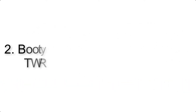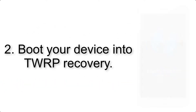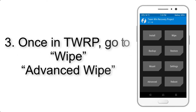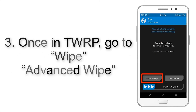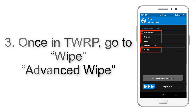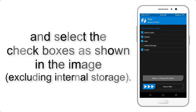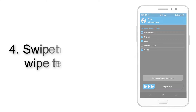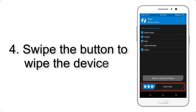Step 2: Boot your device into TWRP recovery. Once in TWRP, click on Wipe, then Advanced Wipe, and select the checkboxes as shown in the image, excluding internal storage. Step 4: Swipe the button to wipe the device.